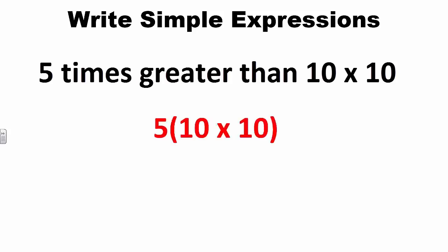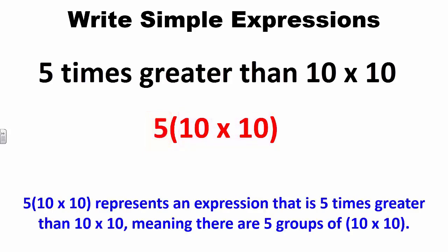What about this problem? Write an expression for 5 times greater than 10 times 10. This problem is asking us to write an expression that is 5 times greater than 10 times 10. We can write this as 5 × (10 × 10). Students should understand that a number located outside of the parentheses means to multiply by the amount inside the grouping symbols. So 5 × (10 × 10) represents an expression that is 5 times greater than 10 times 10, meaning there are 5 groups of 10 times 10.